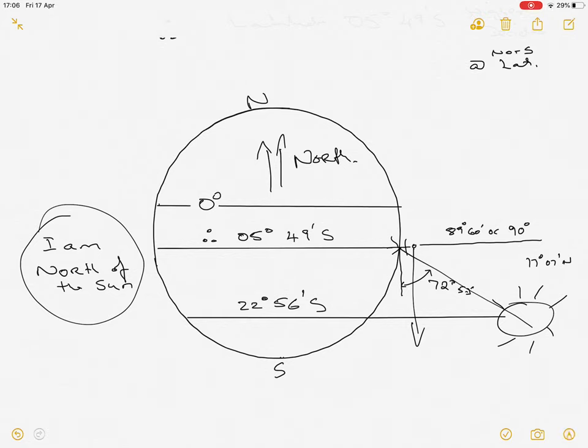The next thing we need to understand is, on this particular day, and whatever it is, we go and look at a nautical almanac, or we go and look at a perpetual almanac, and we get exactly where the sun is directly above the Earth. So in other words, that angle of the Earth and the sun is 90 degrees. Ok, so it's on the latitude line of 22 degrees 56 minutes south.